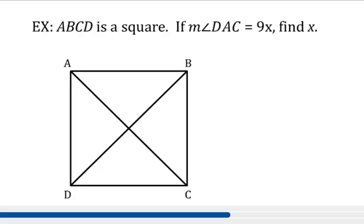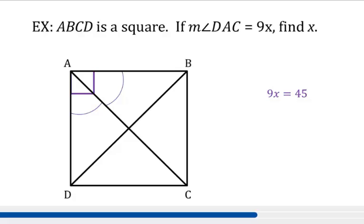Let's try a square problem. Please pause the video and try it on your own first. ABCD is a square. If the measure of angle DAC is equal to 9X, find X. The corner angles are right angles, so angle A is 90 degrees. Since a square is also a rhombus, the diagonals bisect the opposite angles, so the two angles that A is divided into are equal — each is 90 divided by 2, which is 45 degrees. So 9X equals 45, and dividing both sides by 9, X equals 5.